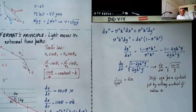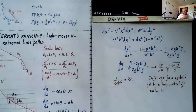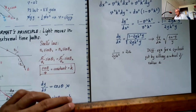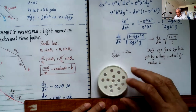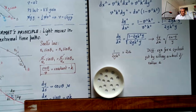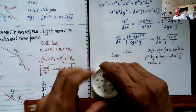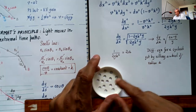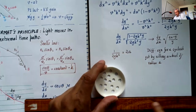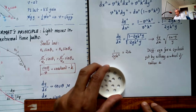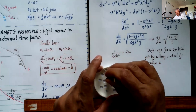Now let me show how the cycloid is generated. You have a fixed track, and then a wheel rolling on it without slipping. The locus of any point on the wheel traces out portions of a cycloid. Let me draw it — you can see the point barely moves here, then starts picking up speed, moves faster and faster, and moves fastest when it's at the top.